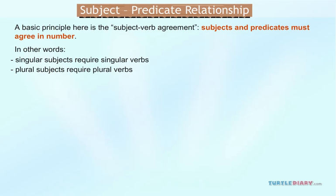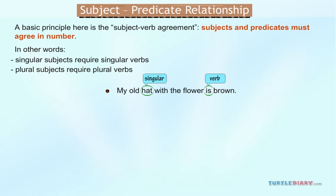For example, 'My old hat with the flower is brown.' Here, the simple subject — hat — is singular, and so is the verb — is.